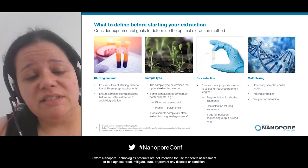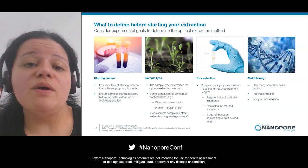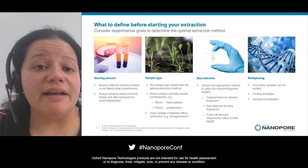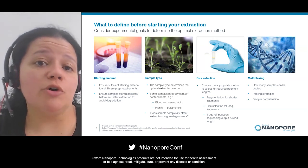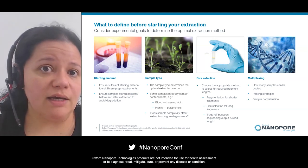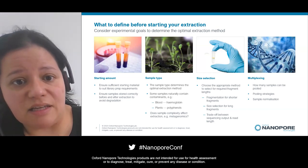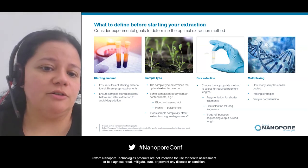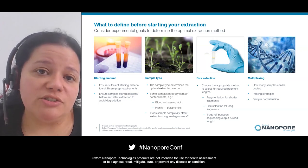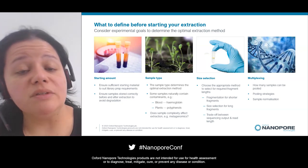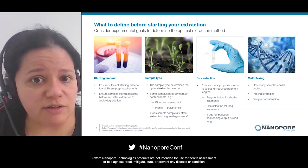Some samples naturally contain contaminants — for instance, plants. We recommend extracting with CTAB and then doing an extra purification step. For samples that naturally contain more contaminants, you may benefit from that extra purification. You also need to consider if you are working with a mixed sample — for instance, a soil sample for metagenomics — or if you want to do some sort of depletion of certain species, which affects your choice of extraction method.